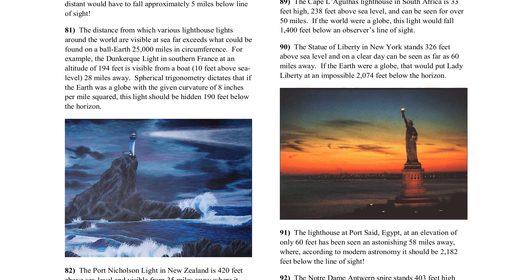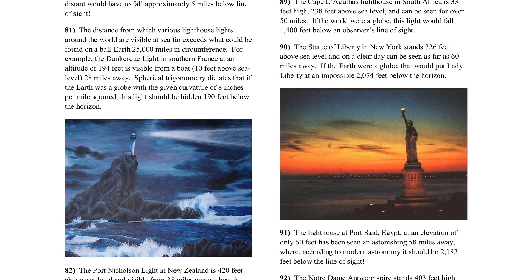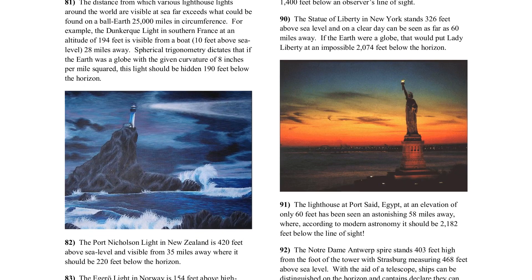The distance from which various lighthouse lights around the world are visible at sea far exceeds what can be found on a ball Earth 25,000 miles in circumference. For example, the Dunkirk light in southern France, at an altitude of 194 feet, is visible from a boat 10 feet above sea level, 28 miles away. Spherical trigonometry dictates that with a curvature of 8 inches per mile squared, this light should be hidden 190 feet below the horizon. Whereas, if we use calculations that are actually accurate, the height of the curve between these two points would be 130 feet or so — so the top of this lighthouse would clearly be above the horizon.